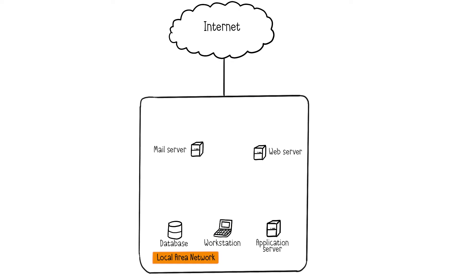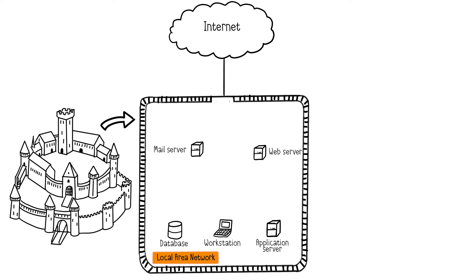Let's explain the components of network security using the metaphor of defending a medieval castle. The goal of a network security architecture is to organize the information system in a manner that enables improved control, monitoring, threat detection, and of course responsive actions.